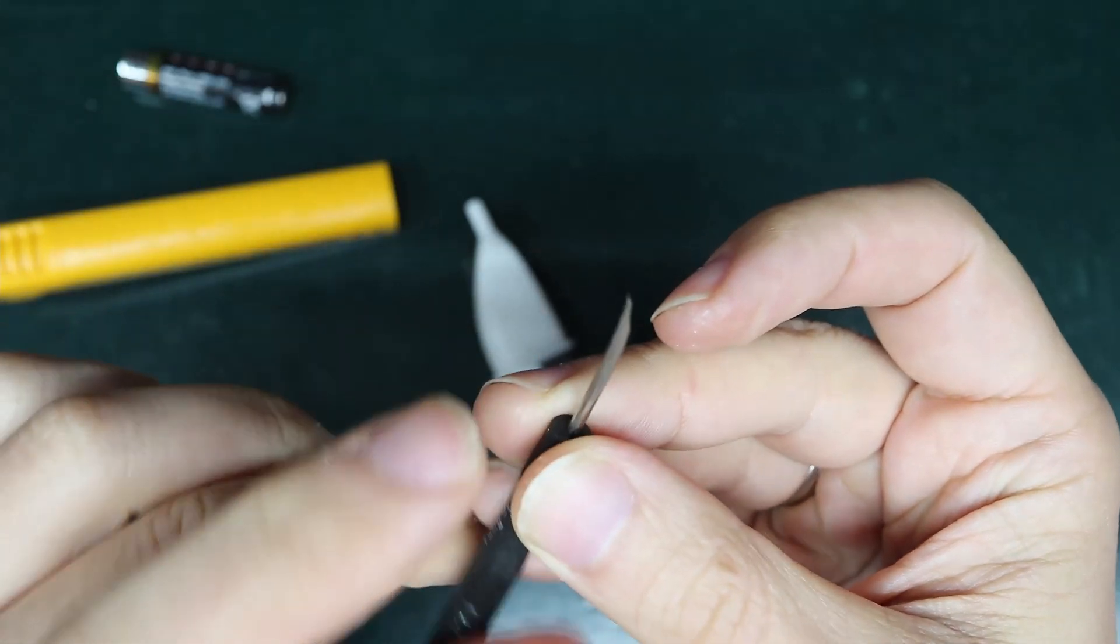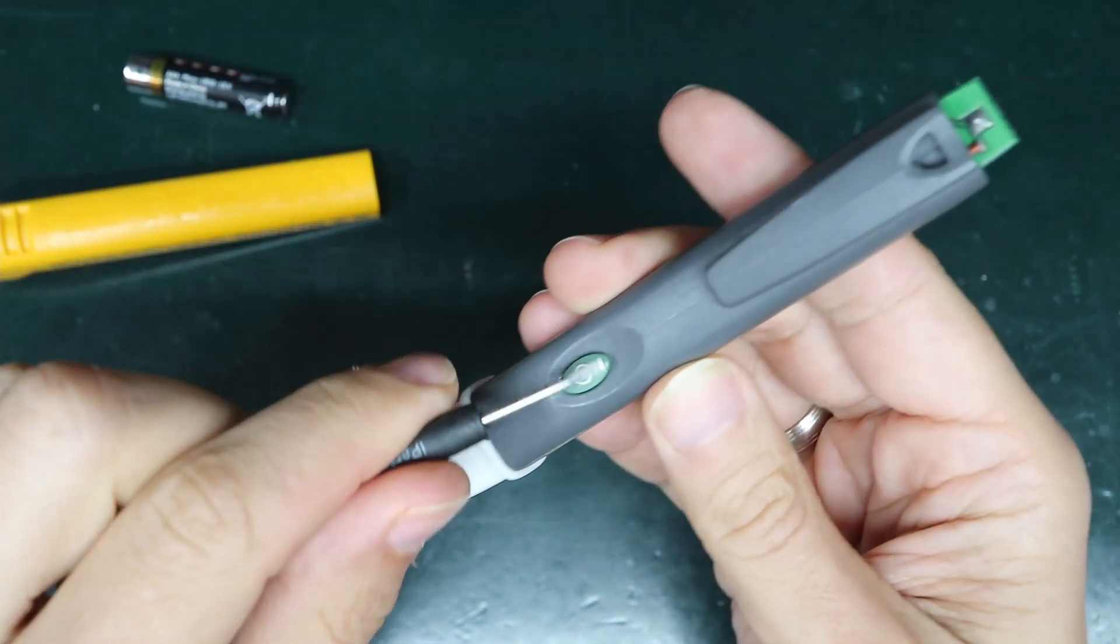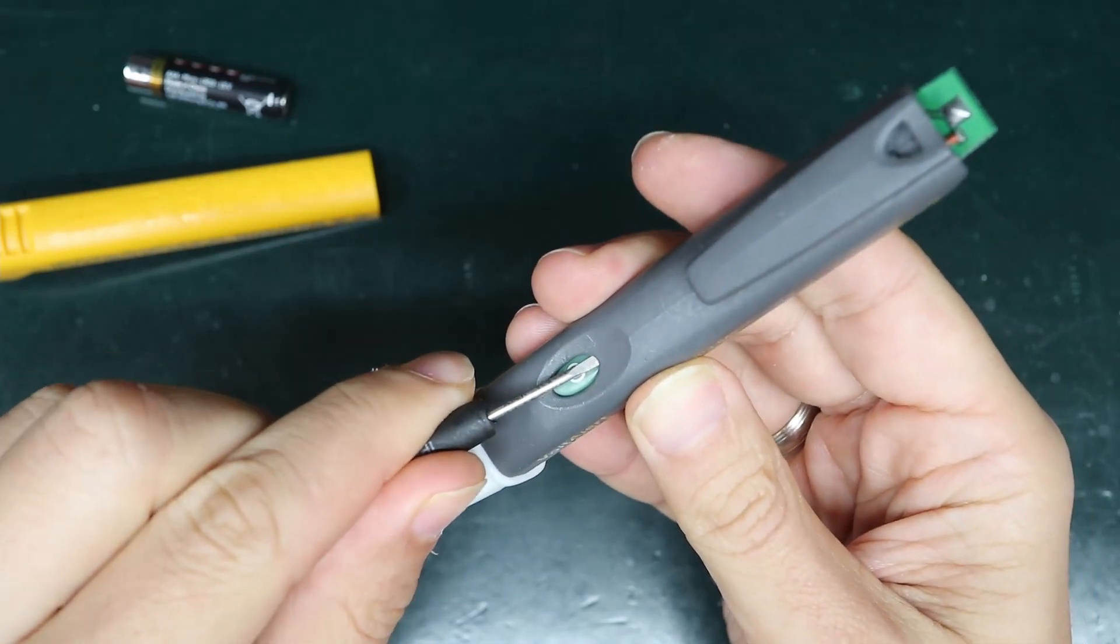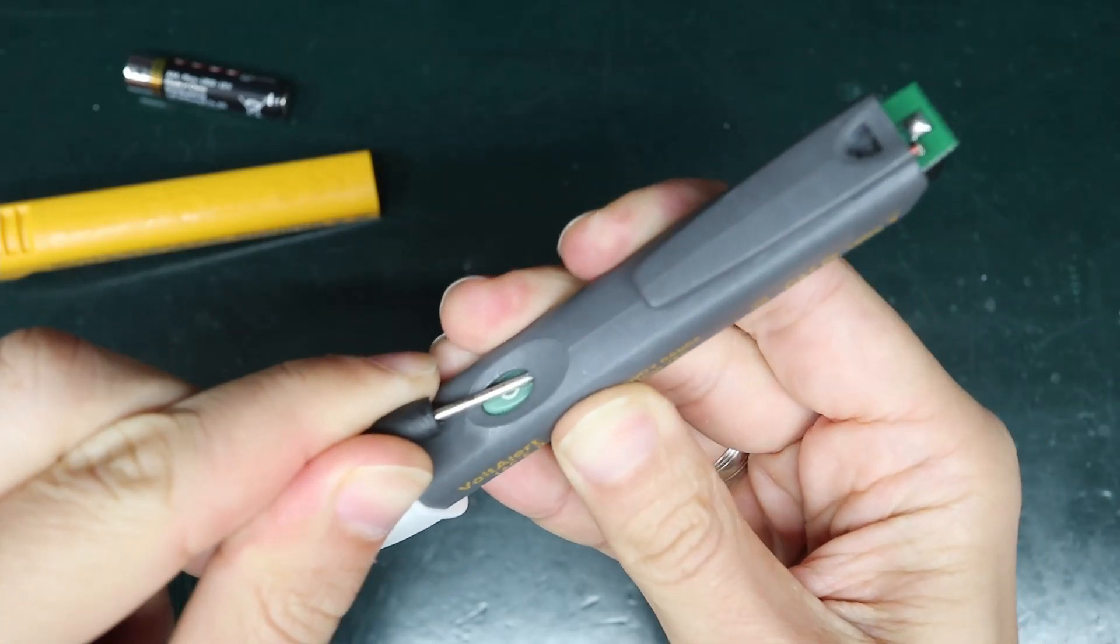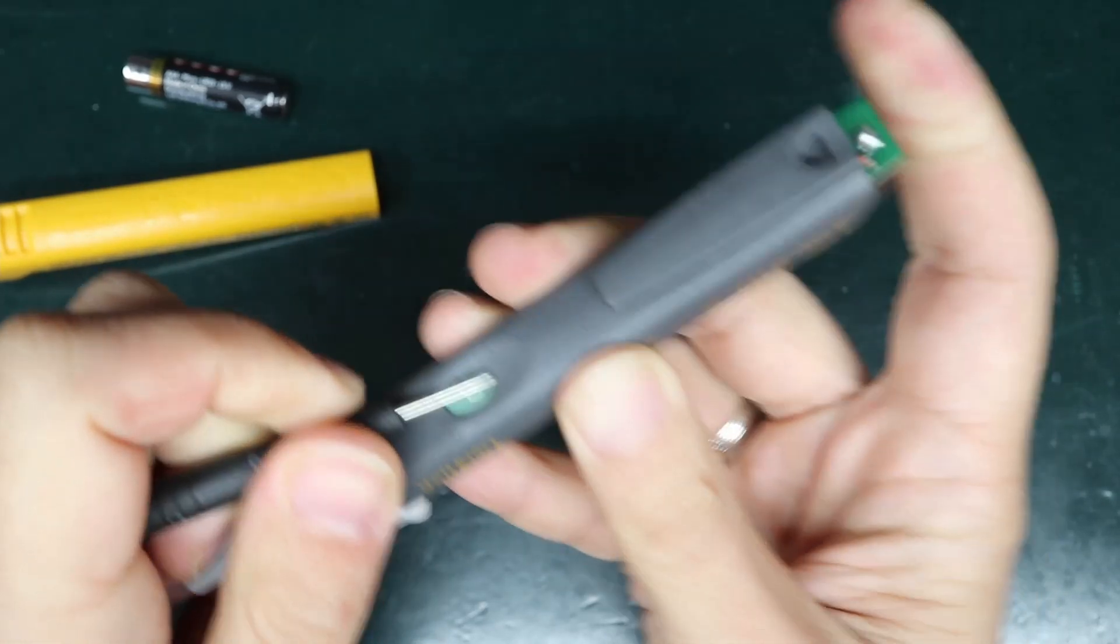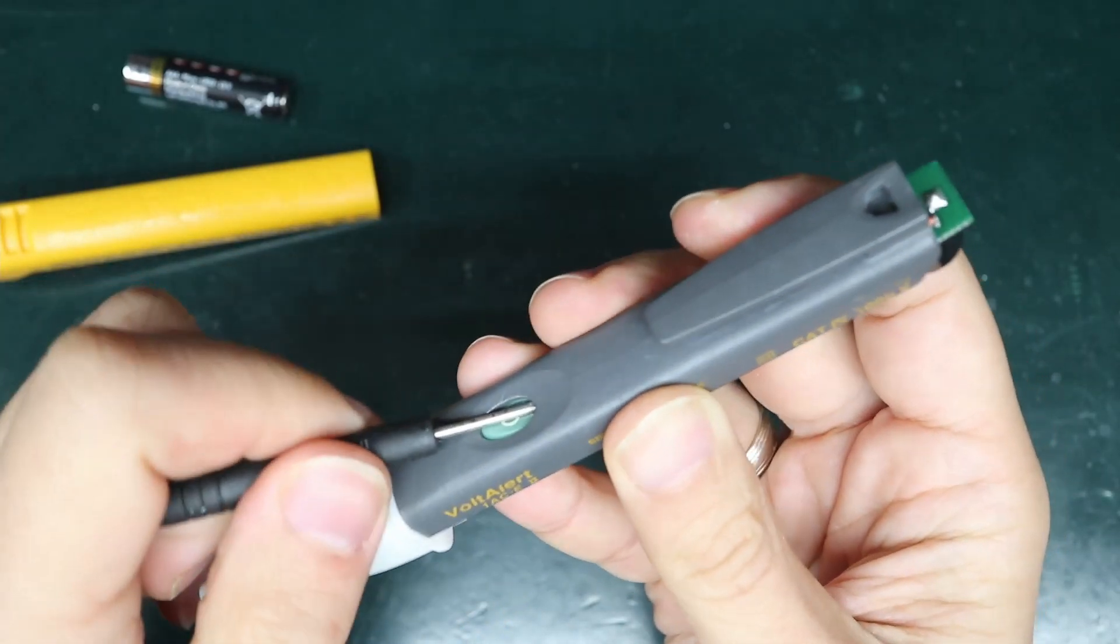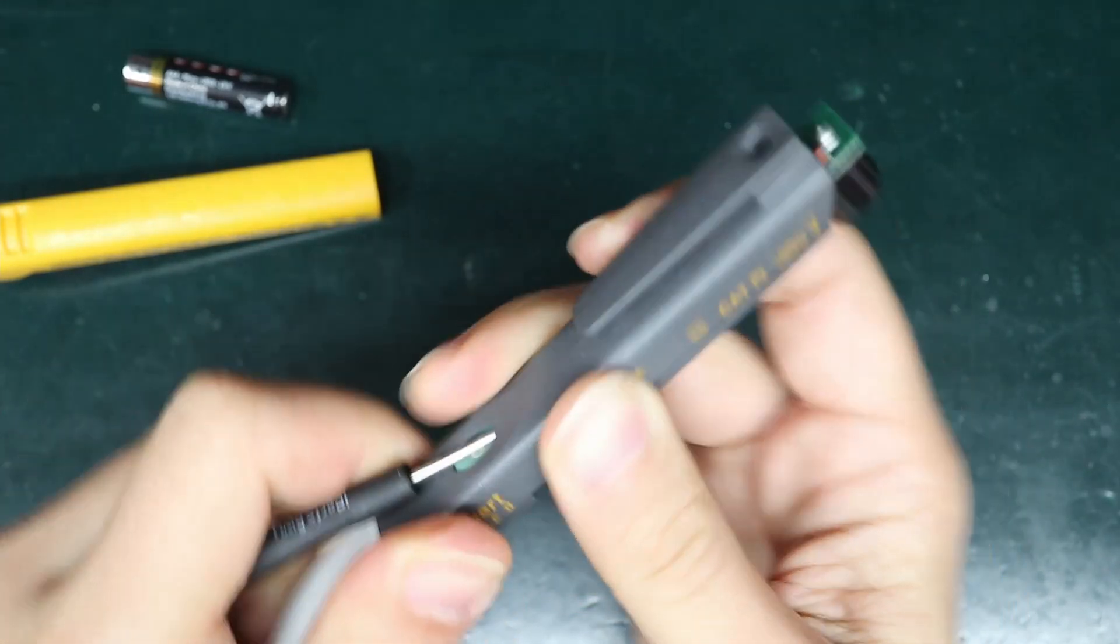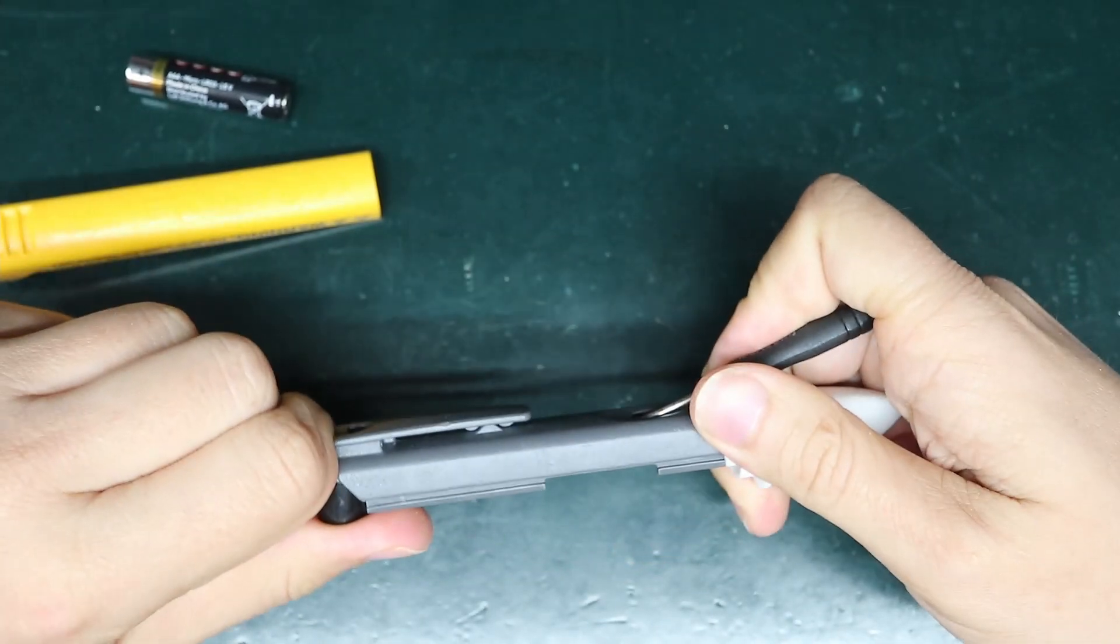I'm going to show you what I'm doing. Take the screwdriver and put it from here like so, and push it until you bend the internal metal spring. Using two hands, try to remove the board.